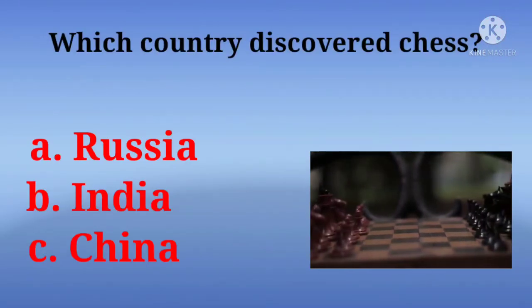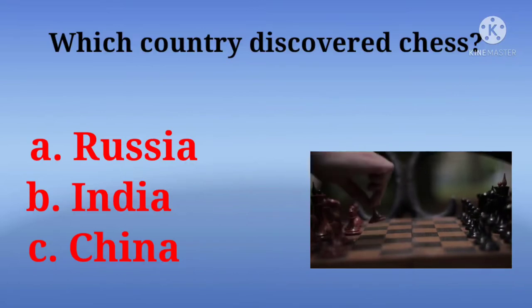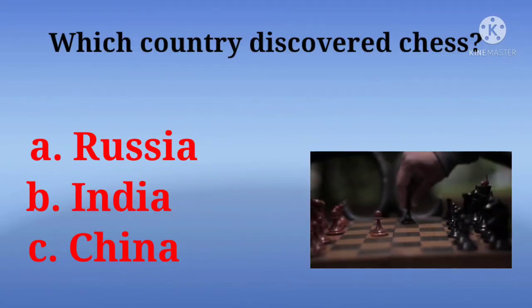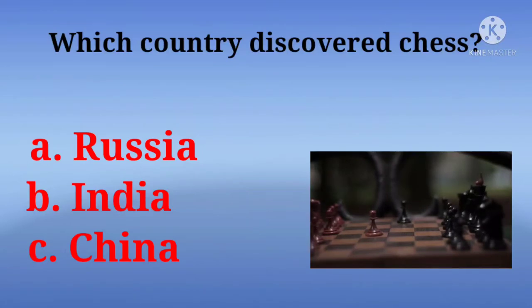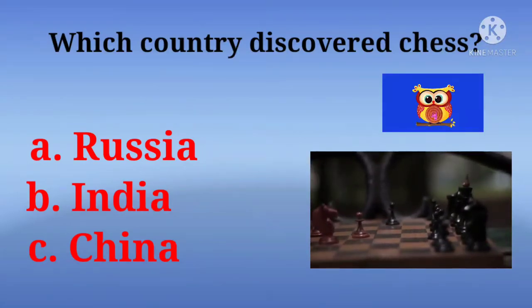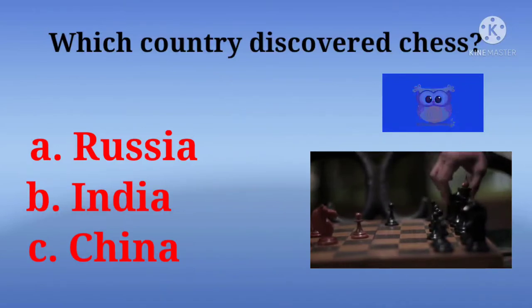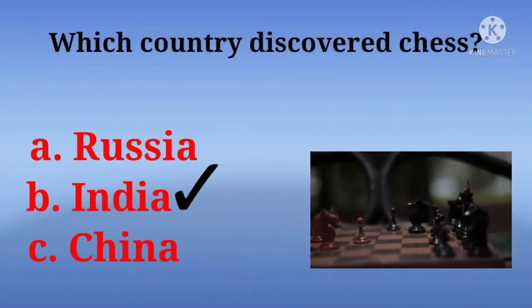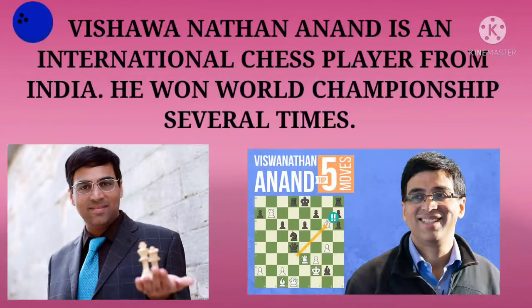Which country discovered chess? Kis desh ni shatranj ka avishkar kya hai? Options are Russia, India, or China. Answer is India. Vishwanathan Anand Bharat ke antirashtriya shatranj khiladi hai, jo kai baar vishwa vijeta bhi rah chuke hain.